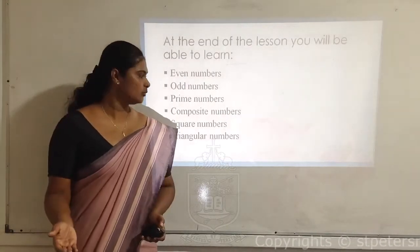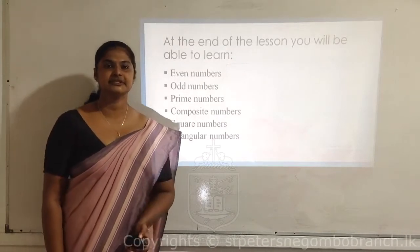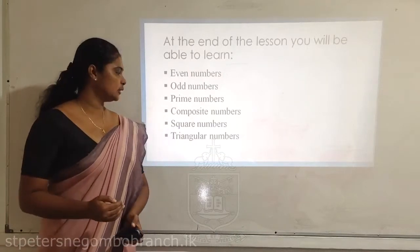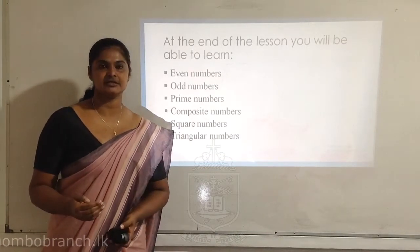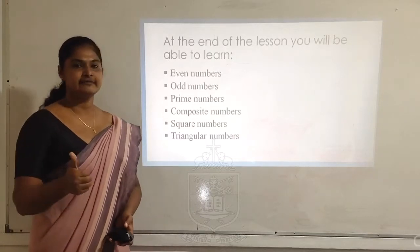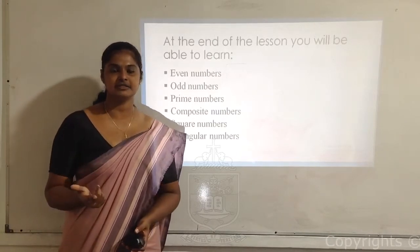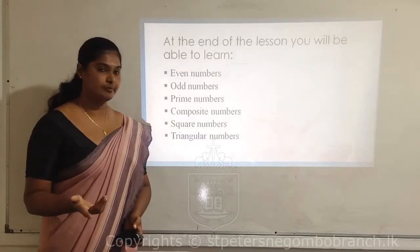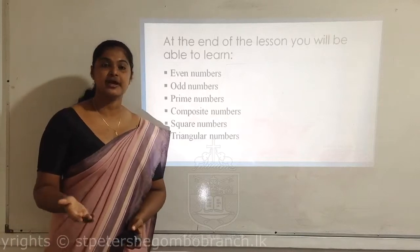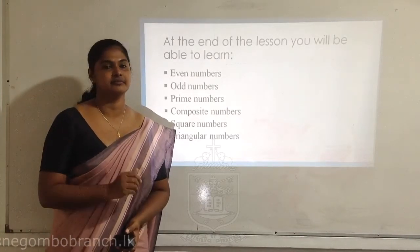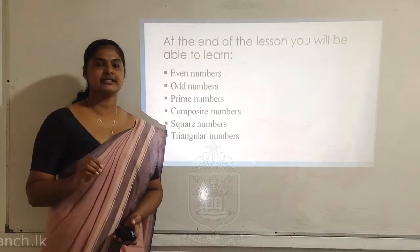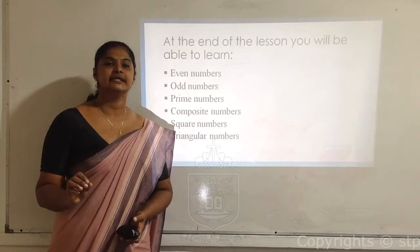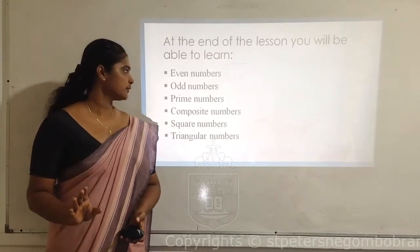Let's learn what the types of numbers are. There are seven types of numbers, but we are going to learn only six types according to your syllabus: even numbers, odd numbers — which you are very familiar with — then prime numbers, composite numbers, square numbers, triangular numbers, and rectangular numbers. When I say rectangular numbers, it is a bit confusing. I will explain it at the end of this lesson.